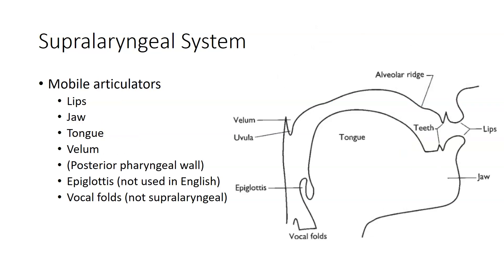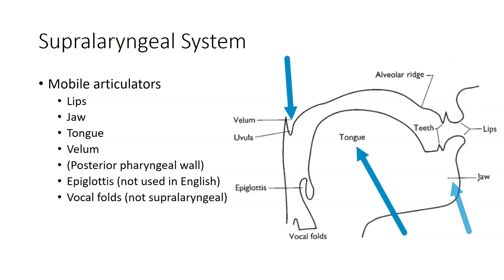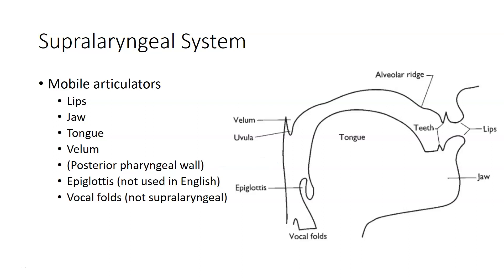We also have a variety of mobile articulators in the supralaryngeal system: the lips, the jaw, the tongue, and the velum, all of which can be moved to make articulations happen. The posterior pharyngeal wall is actively pulled forward in the creation of some speech sounds by some speakers. The epiglottis is not an active articulator in English, but there are languages that pull the epiglottis back toward the posterior pharyngeal wall to create consonants. The vocal folds are also viewed as active articulators for speech sounds that have a laryngeal articulation only.